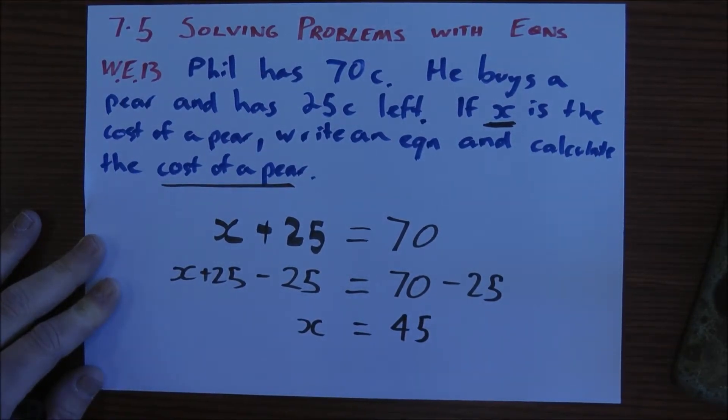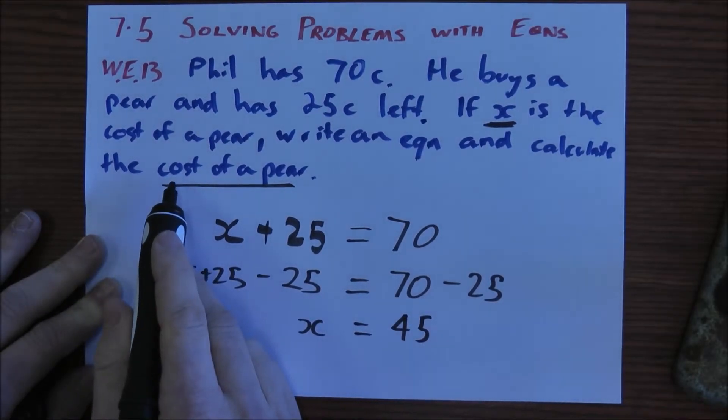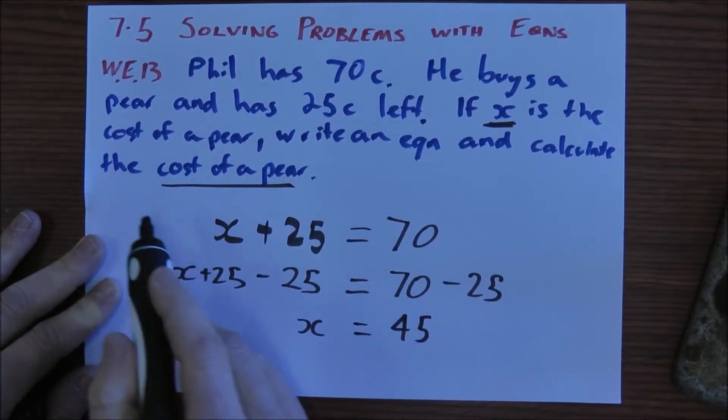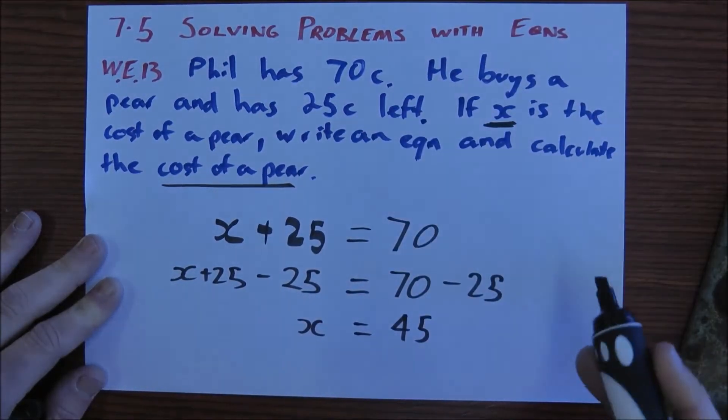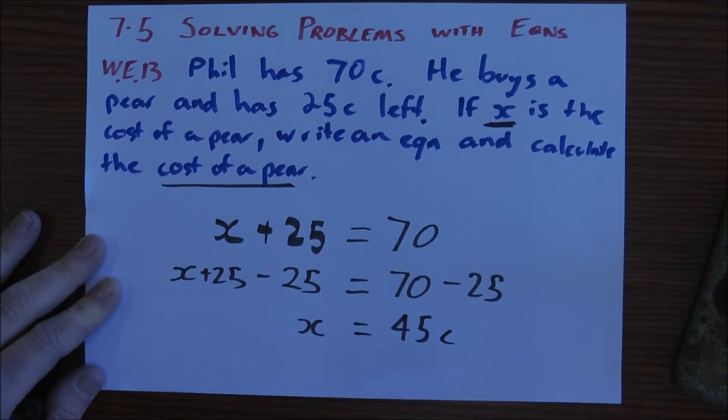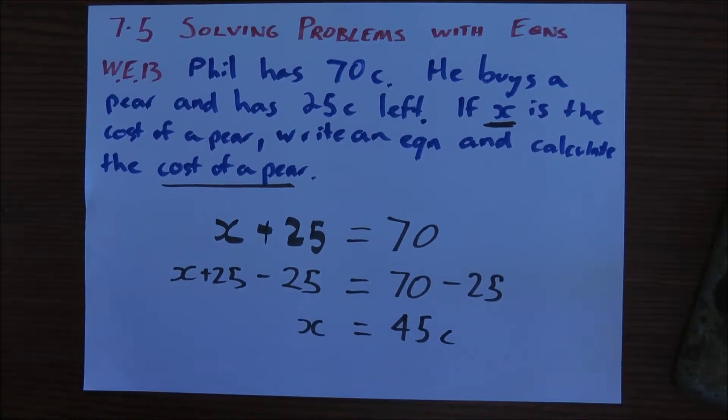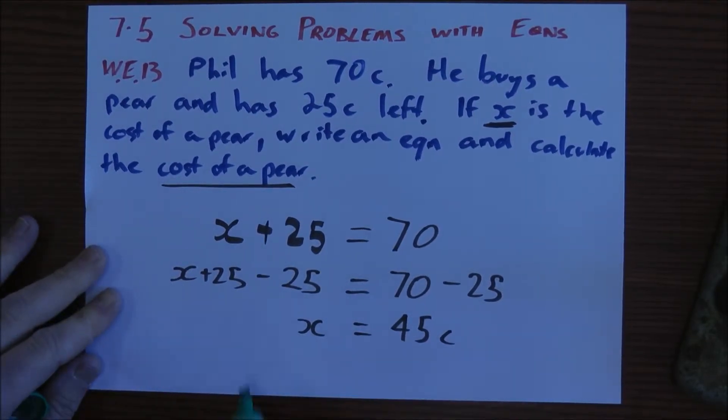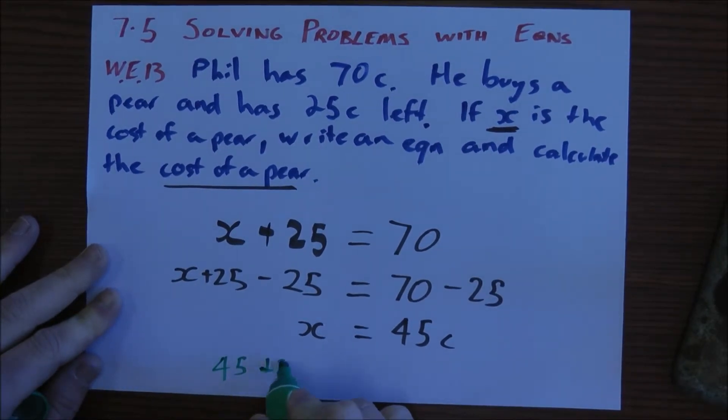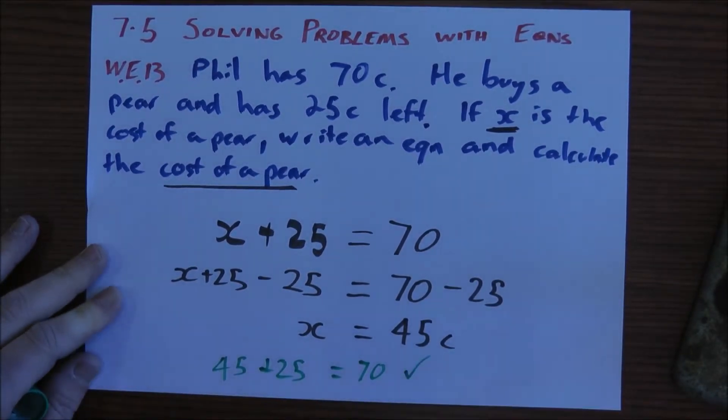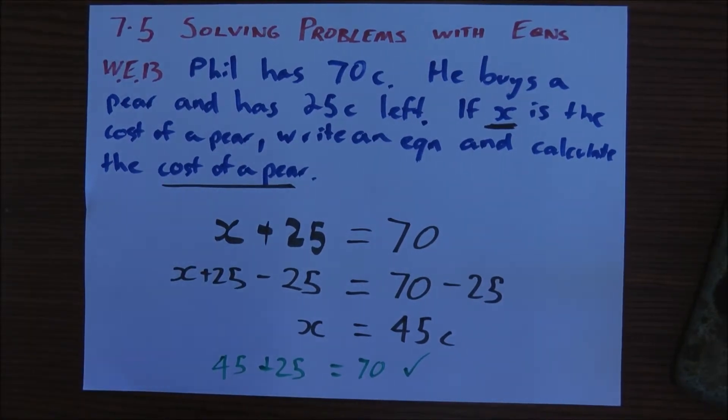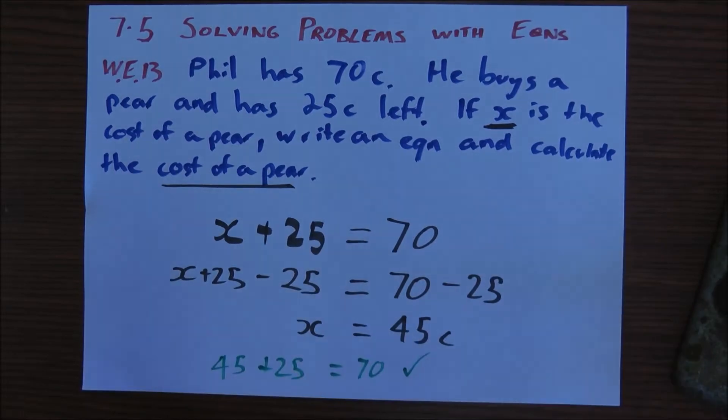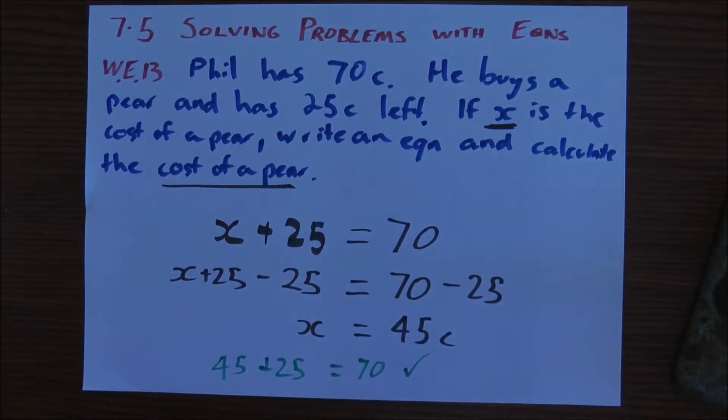Now that's not my final answer because we need the cost of a pear and cost is usually measured in something, either dollars or cents. Everything so far has dealt with cents. So 45 cents was the cost of a pear. Now I can check this by putting it back into my equation. I know that X is 45 so it should satisfy this equation. 45 plus 25 should equal 70. And if I add those two together, they do equal 70 so I know it's right. The essential bit here is this working out that I've done in the black ink.